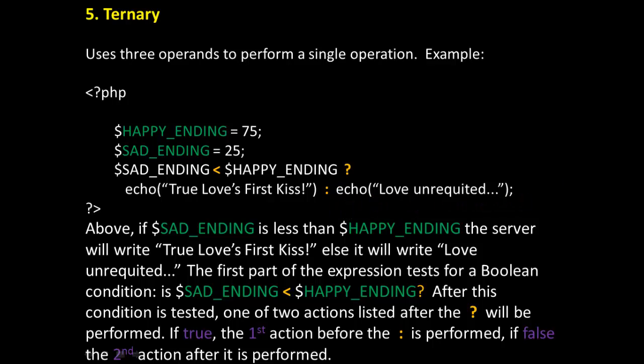Again, let me rephrase this. So if sad ending is less than happy ending, the server will write true love's first kiss, else it will write love unrequited. The first part of the expression tests for a Boolean condition: is sad ending less than happy ending. After this condition is tested, one of two actions listed after the question mark will be performed. If true, the first action before the colon is performed. If false, the second action after the colon is performed.